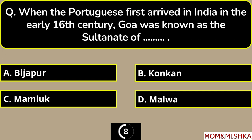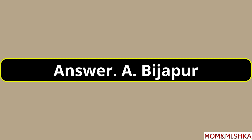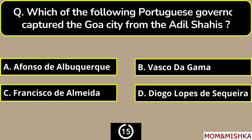When the Portuguese first arrived in India in the early 16th century, Goa was known as the Sultanate of blank — Sultanate of Bijapur, option A.